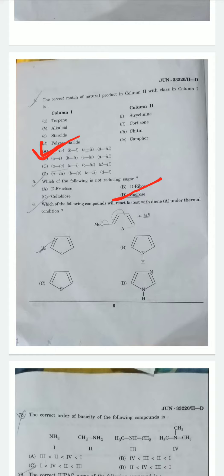Question 5: Which of the following compounds will react fastest with diene under thermal conditions? Furan reacts best with diene. Therefore option A is the correct one.